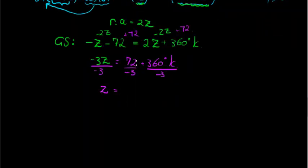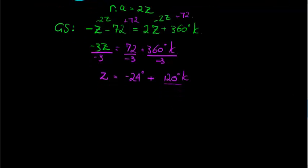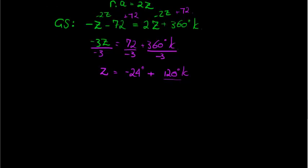Finally everything must be divided with a negative 3. That means z is equal to... 3 goes in there 24 times, so -24°. And here 360 divided by 3 gives me 120. It should be -120° times k, but since k takes on positive and negative values it doesn't really matter. I keep it as a positive. Now the period for this solution would be every 120°.